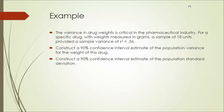Let's take a look at one example. The variance in drug weights is critical in the pharmaceutical industry. For a specific drug with weights measured in grams, a sample of 18 units provided a sample variance of s squared equal to 0.36. Construct a 90% confidence interval estimate of the population variance for the weight of this drug, and then construct a 90% confidence interval estimate of the population standard deviation.